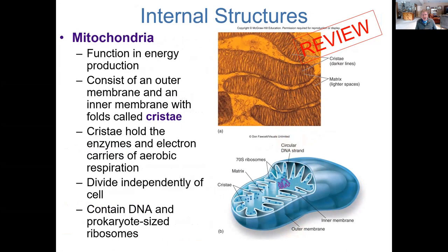Mitochondria — here's our powerhouse organelle. The infoldings of the inner mitochondrial membrane are the cristae. The increased surface area they provide is important for the citric acid cycle or Krebs cycle. This is absolutely critical for aerobic respiration — it's the organelle the cell uses to make lots of ATP. Without ATP, without energy, the cell dies. Note that this organelle can divide independently of cells, contains its own unique DNA, and contains ribosomes similar in size to those found in prokaryotes.